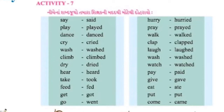Now, carefully look at Activity 7 in your textbook. In this activity, how many word groups are given? These word groups contain present tense verb forms and past tense verb forms. The past tense form of the same verb is placed opposite its present tense form. We have to read these word groups carefully and read them aloud. So, are you ready? Let's start.